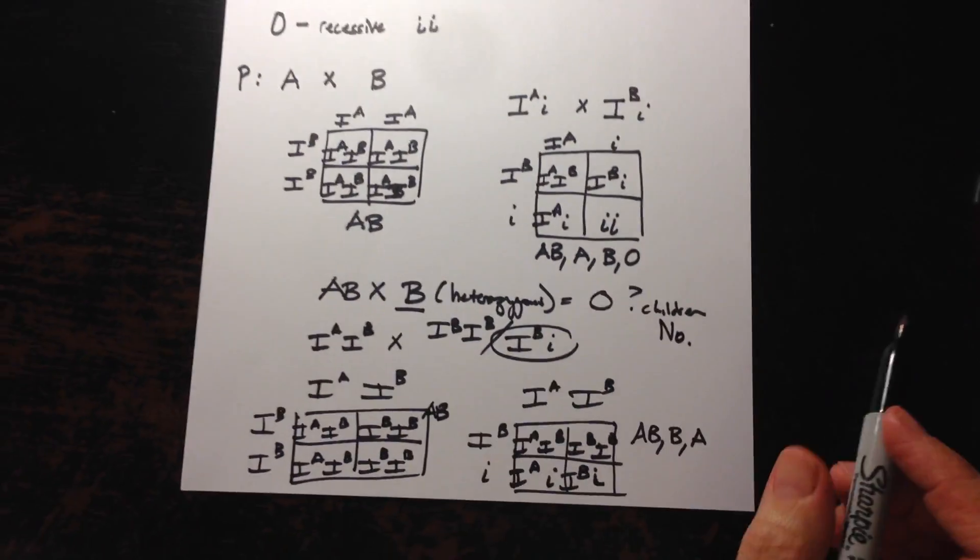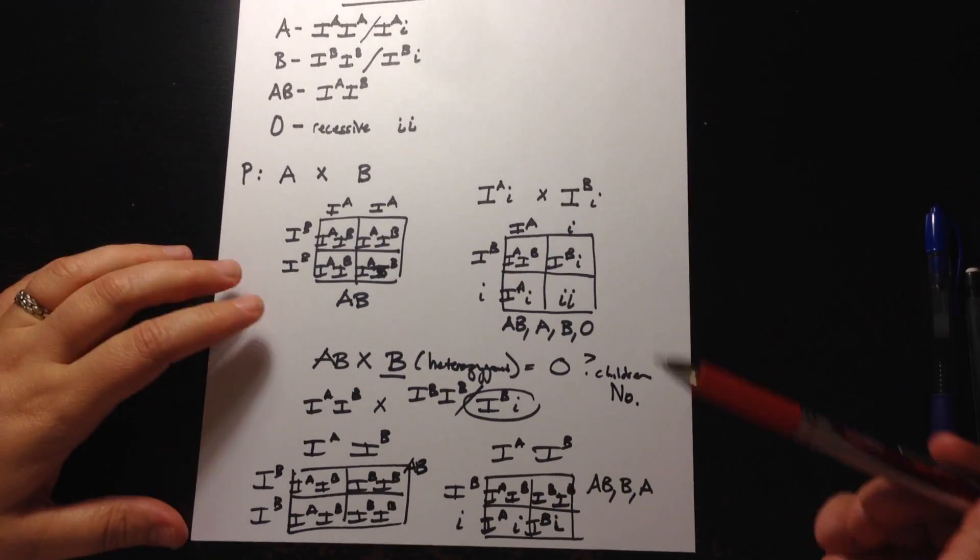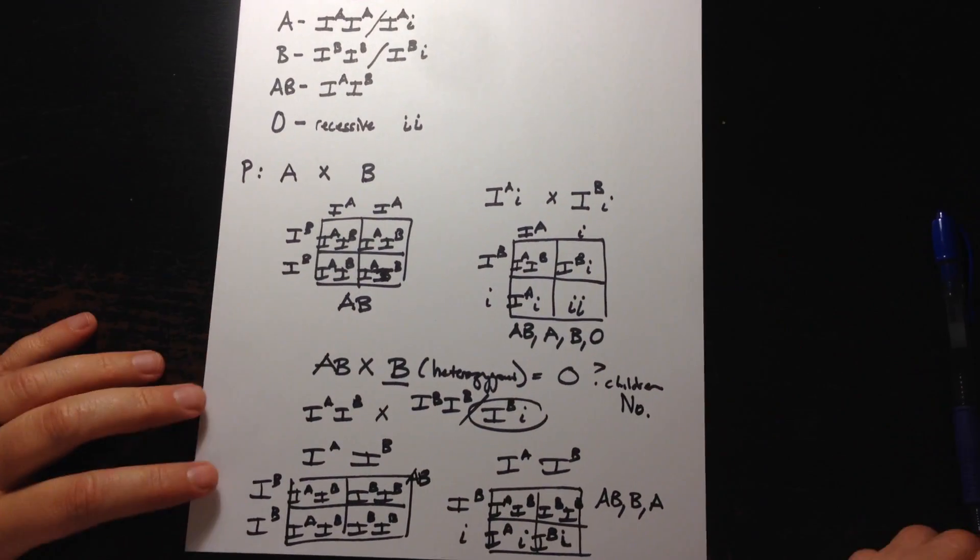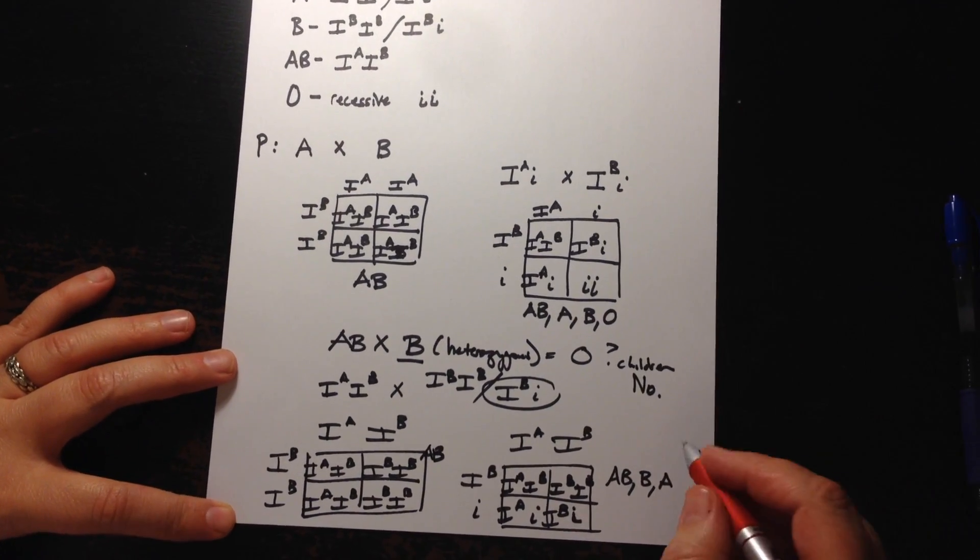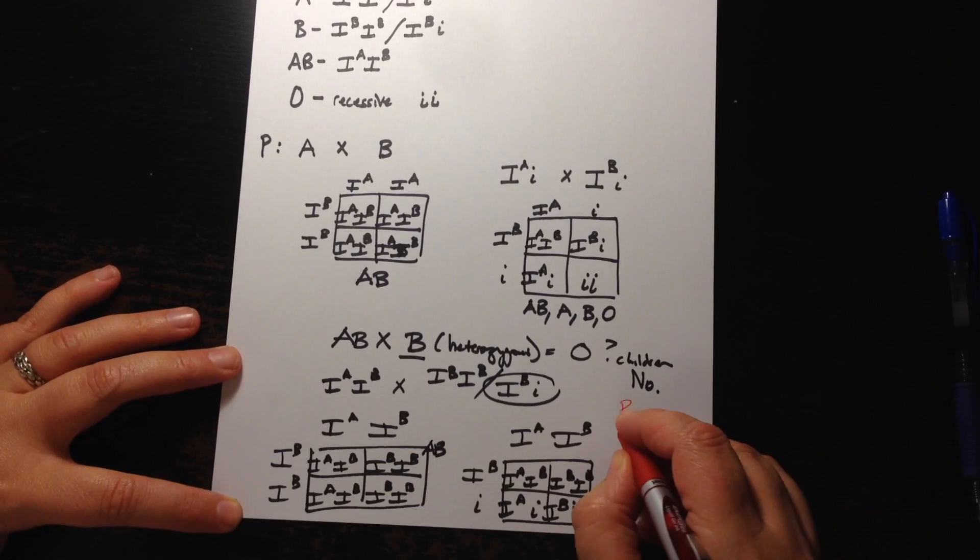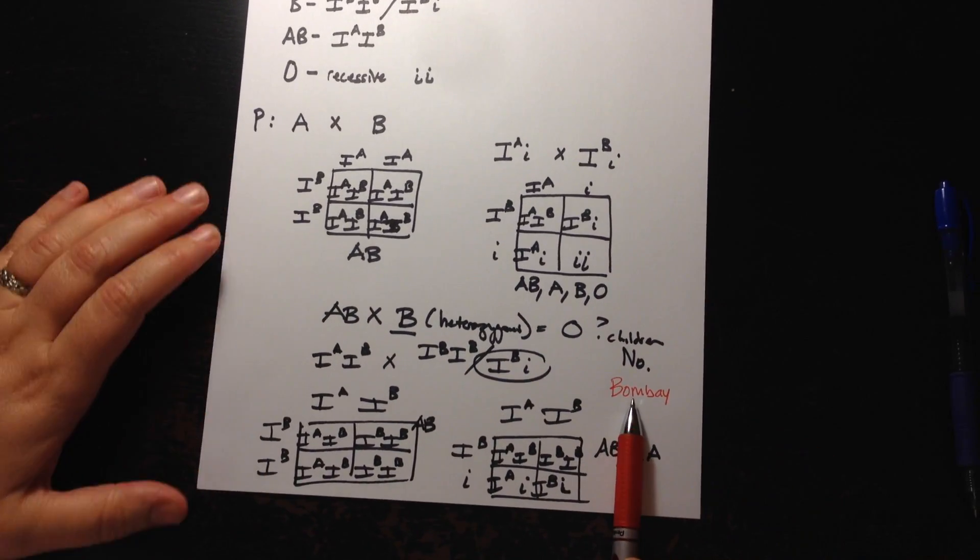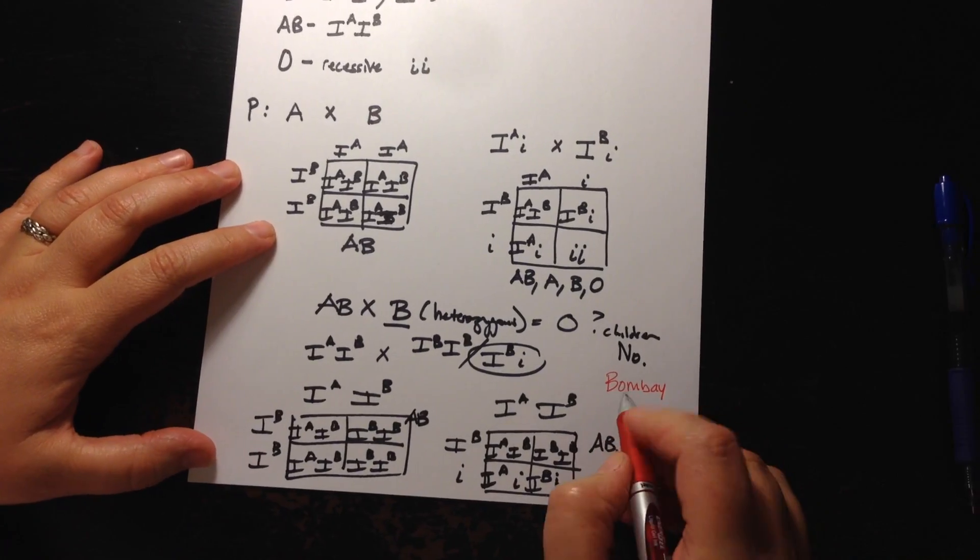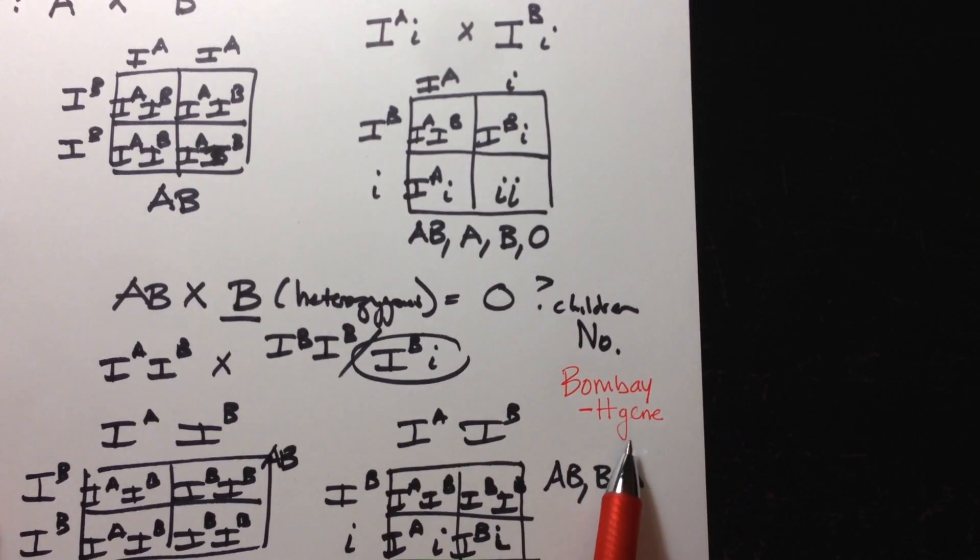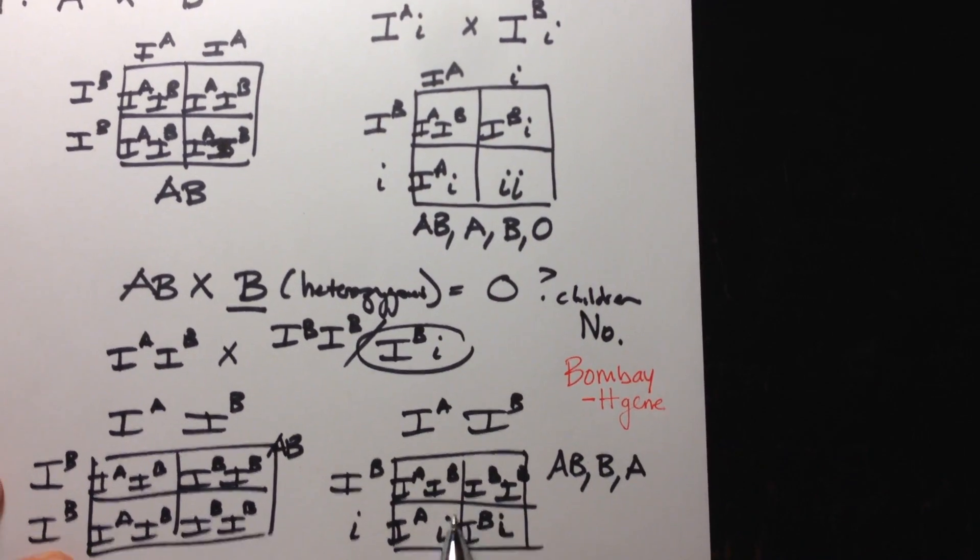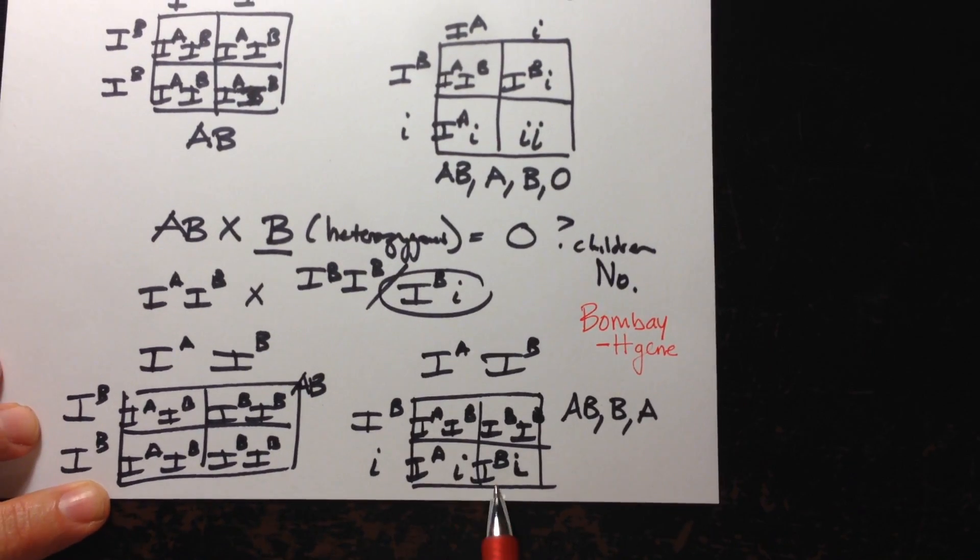However, there's one scenario that I want to point out that is very interesting. Remember I said that there are more than 30 different kinds of blood in humans and one such a rare blood type is called the Bombay phenotype. And it was discovered for the first time in India, in Bombay. And what happens here is an H gene is missing and that causes a dominant allele to behave like a recessive allele.